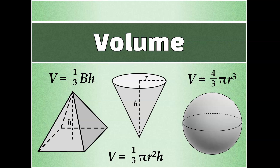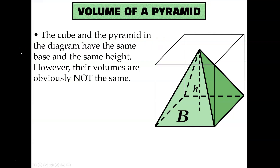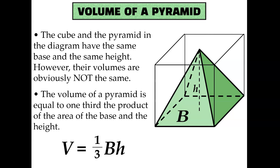Let's talk about how to calculate the volume of pyramids, cones, and spheres. Consider this pyramid, which has been placed inside of a cube. The pyramid and the cube have the same height and the same base, but obviously their volumes are not equal. The volume of the pyramid is less than the volume of the cube — it's actually equal to a third. The volume of a pyramid is equal to one-third the product of the base and the height of the pyramid.